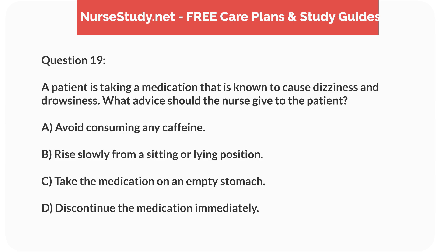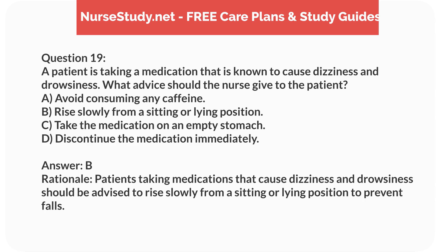Question 19. A patient is taking a medication that is known to cause dizziness and drowsiness. What advice should the nurse give to the patient? A. Avoid consuming any caffeine. B. Rise slowly from a sitting or lying position. C. Take the medication on an empty stomach. D. Discontinue the medication immediately. Answer: B. Rationale: Patients taking medications that cause dizziness and drowsiness should be advised to rise slowly from a sitting or lying position to prevent falls.